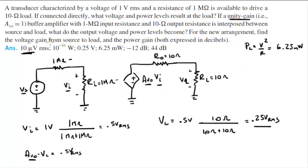So 6.25 milliwatts and 0.25 volts. As you can see, everything is much improved now. For the new arrangement, they want you to find the voltage gain from source to load and the power gain, both expressed in decibels.